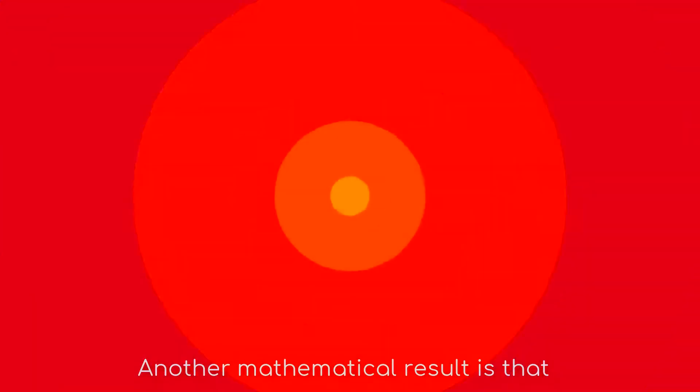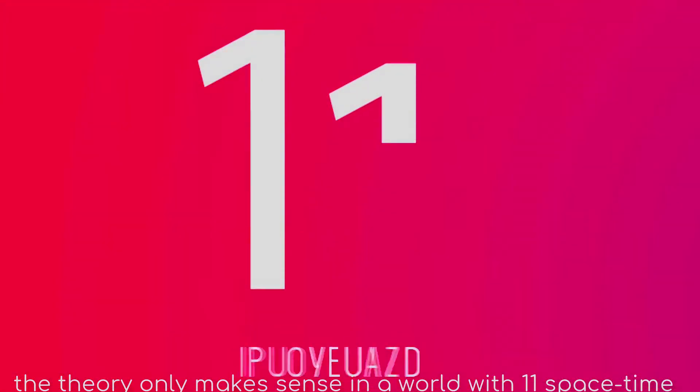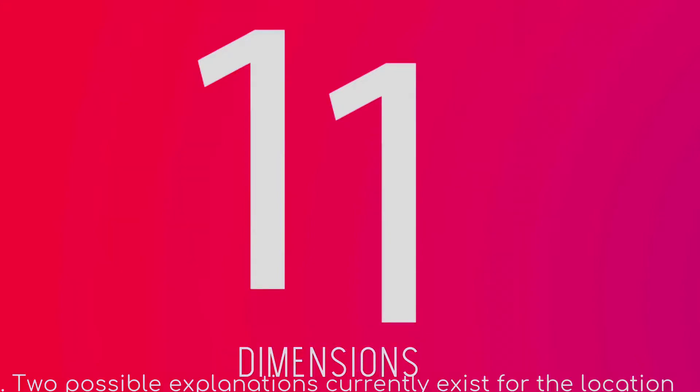Another mathematical result is that a theory only makes sense in a world with 11 space-time dimensions. Two possible explanations currently exist for the location of extra dimensions.